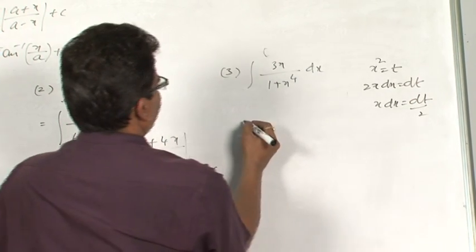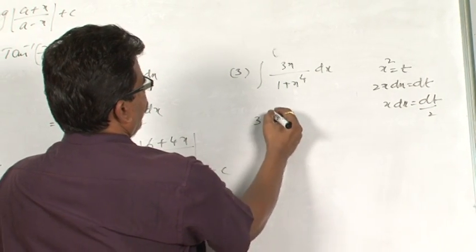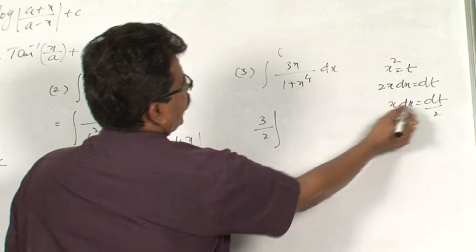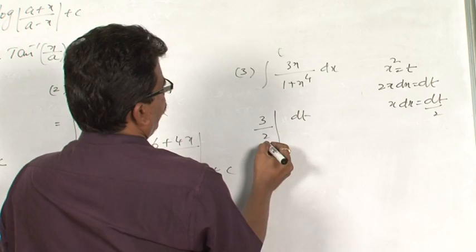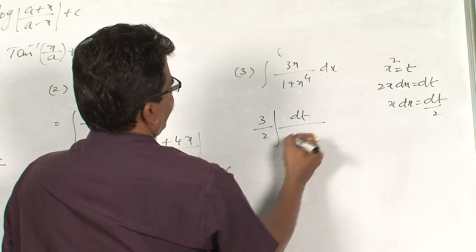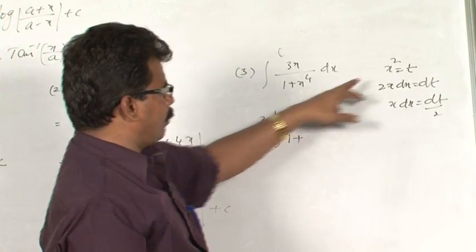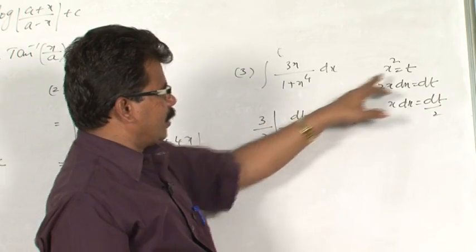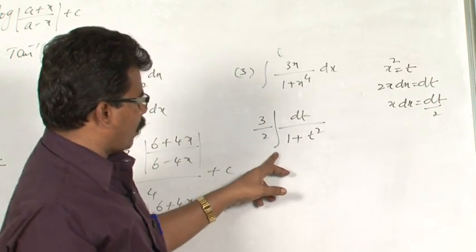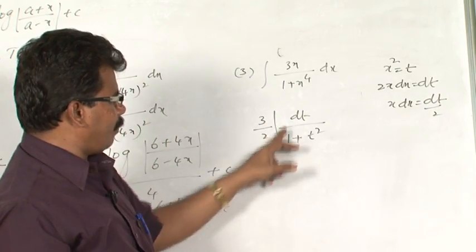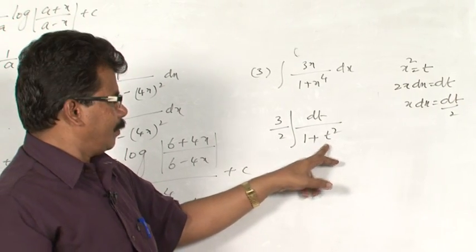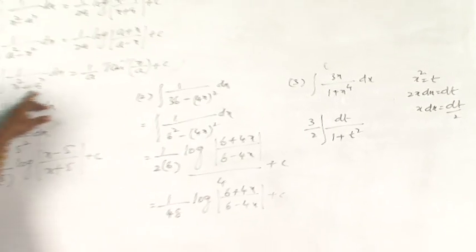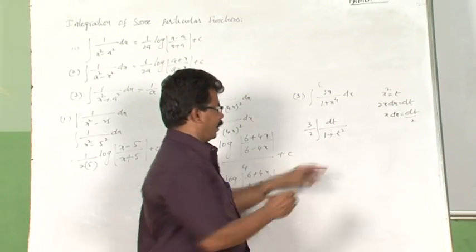If you substitute the values here, take 3 outside the integral: dt by 2. The 2 also I am taking outside. x dx can be written as dt by 2. The 1 plus x power 4 can be written as t square. x power 4 is nothing but t square. Now it is in the form of integral 1 by 1 plus t square. Variable is changed. It is in the form of 1 by x square plus a square or a square plus x square.